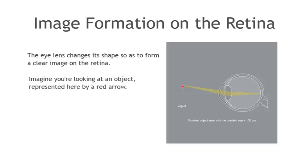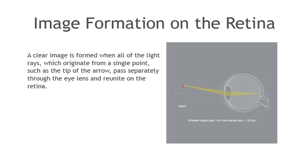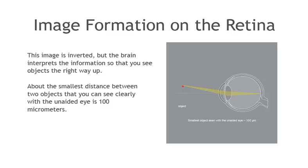The eye lens changes its shape so as to form a clear image on the retina. Imagine you're looking at an object, represented here by a red arrow. A clear image is formed when all of the light rays which originate from a single point, such as the tip of the arrow, pass separately through the eye lens and reunite on the retina. This image is inverted, but the brain interprets the information so that you see the objects the right way up. About the smallest distance between two objects that you can see clearly with the unaided eye is 100 micrometers.